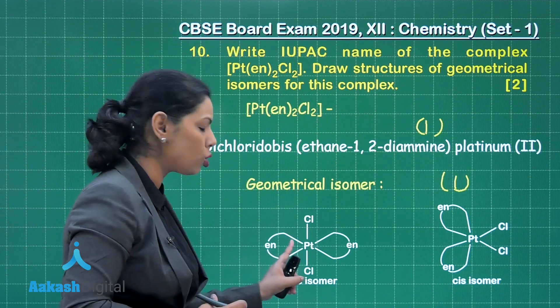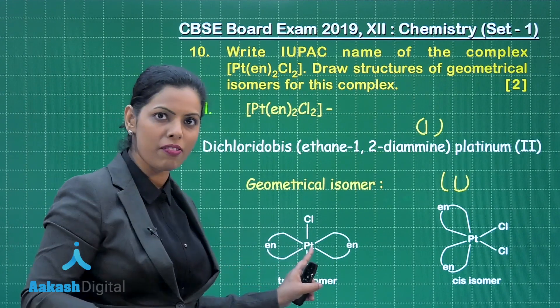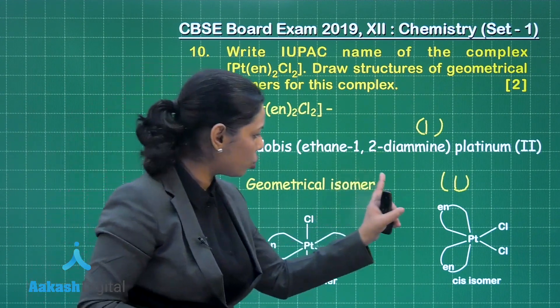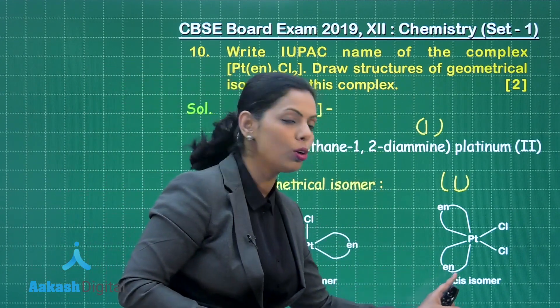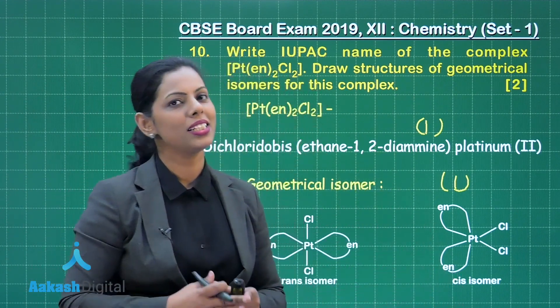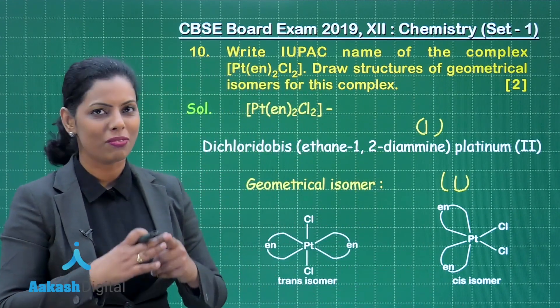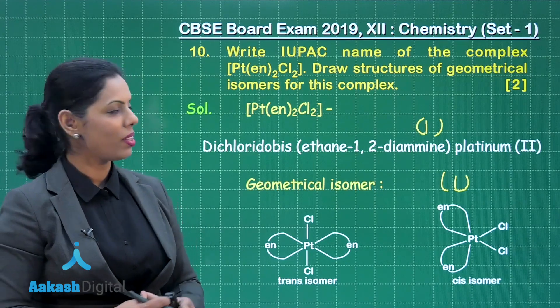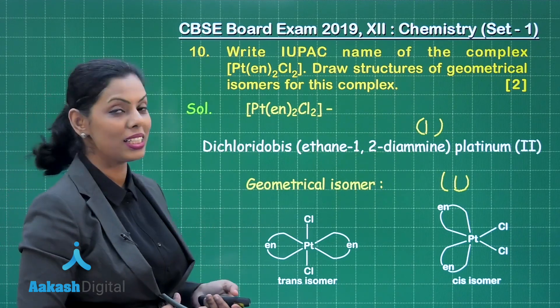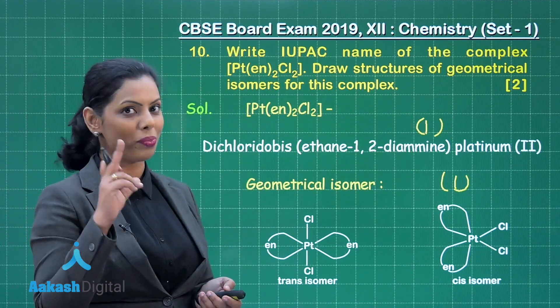If you draw the structure of 1 isomer, you will obtain half a mark. If you draw both, then you will get the full 1 mark. I hope this question is clear to you.